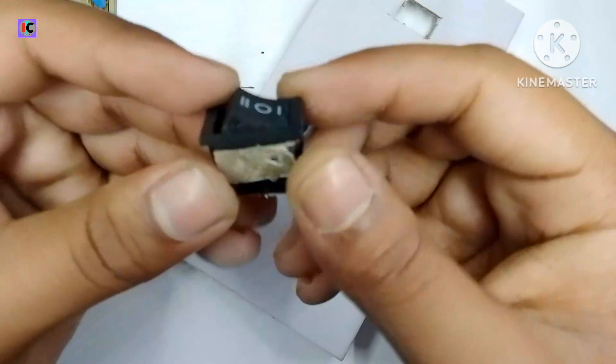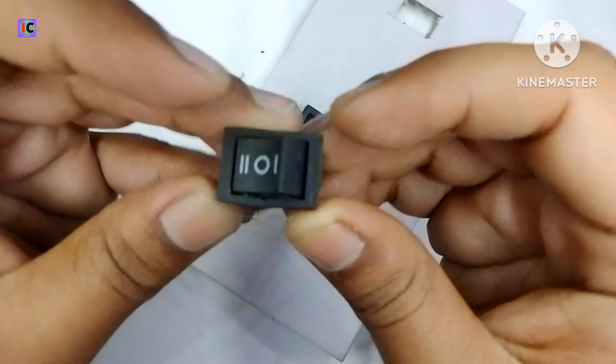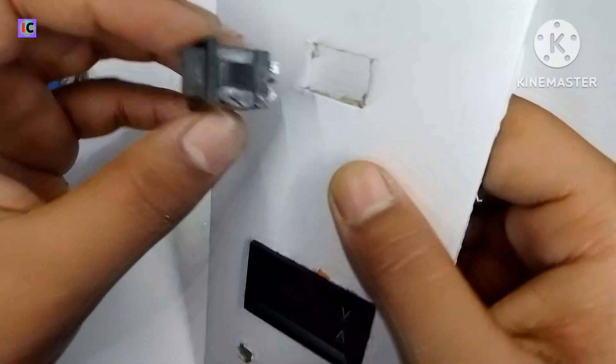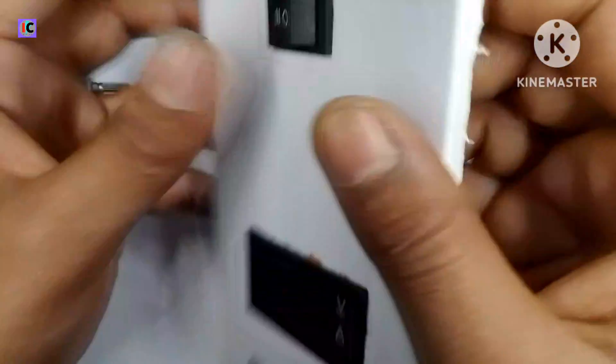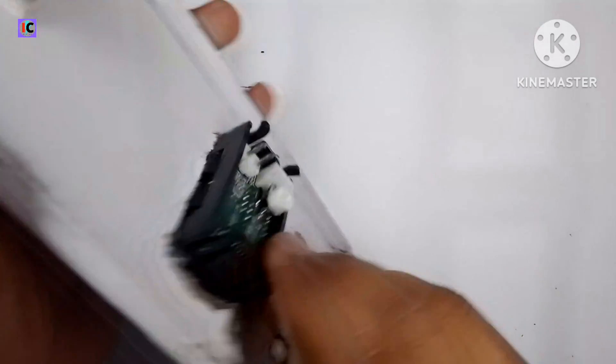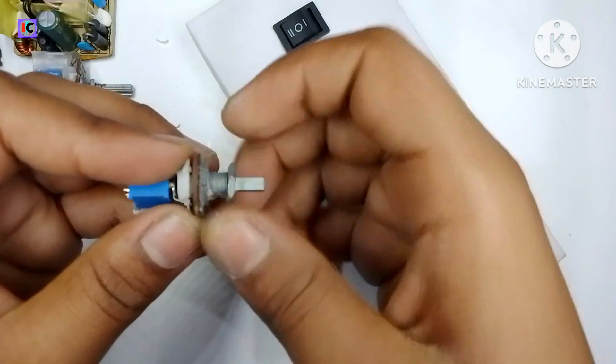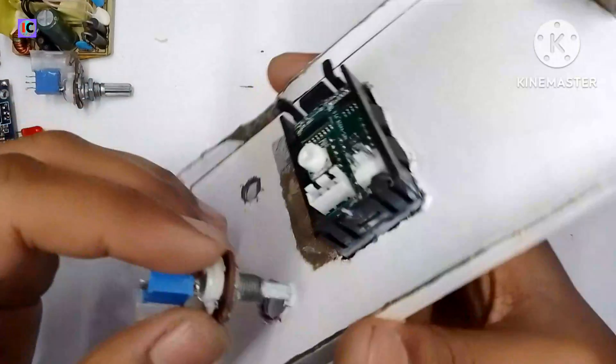Now put the power switch for the on-off of this power supply. This is 6 ampere and 220 volt rated for switching the 220 volt AC for the SMPS.